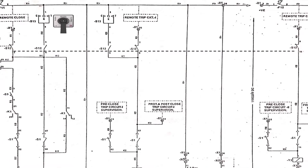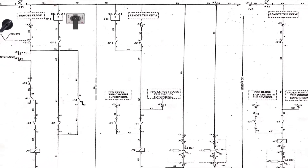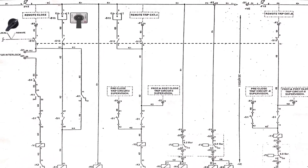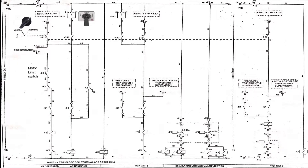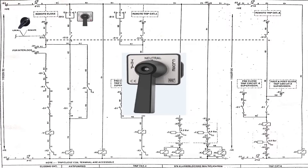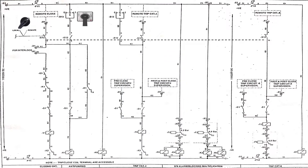This is the TNC switch — Trip, Neutral, Close switch. The switch shape or design can be different but the logic will remain the same. This switch is used for closing or tripping the circuit breaker manually.